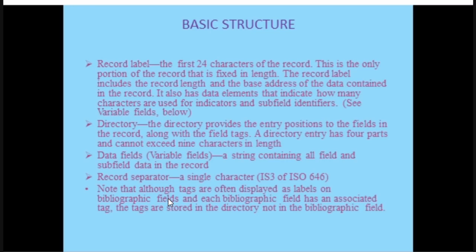The general structure of ISO 2709 consists of four major parts: record label, directory, data fields, and record separator. The record label is the first 24 characters of the record. You won't see any title or something — only numbers and characters that include both numerical values and string values. This is the only portion of the record that is fixed in length — it should contain exactly 24 characters. It includes the record length and the base address of data contained in the record.